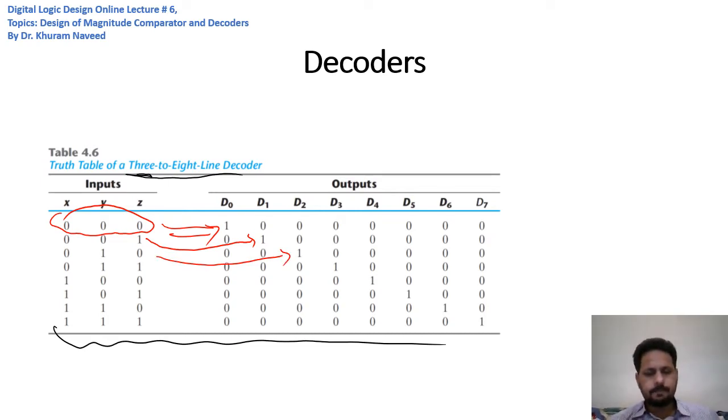For each of these outputs, very simple boolean expressions can be obtained. D₀ is equal to x'y'z', because D₀ is only 1 for this particular input 000, which is of course a min term. D₁ is 1 for